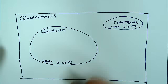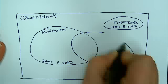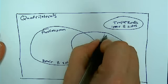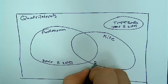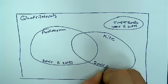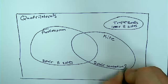And we also had kites. And kites have two pair of consecutive congruent sides.